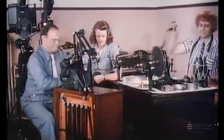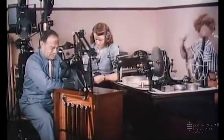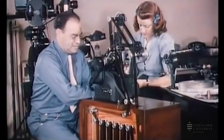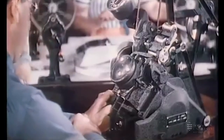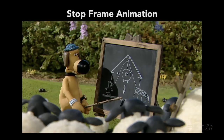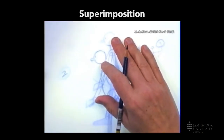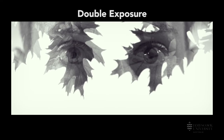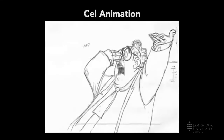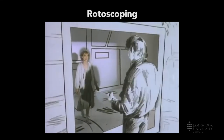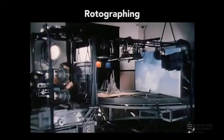The pioneering artists and inventors highlighted in this lecture created a basis for how images and graphic elements could move on screen, and many of these techniques are the basis for all animation: stop-frame animation, superimposition, double exposure, cell animation, rotoscoping, and rotographing. I hope this has been a useful introduction to the evolution of some techniques that are still in use even today, and to some of the innovators who are behind them.